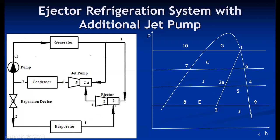This mixture from the ejector then enters the jet pump suction line. If the ejector outlet is directly connected to the condenser and the condenser pressure is high, there is a possibility of back pressure stopping operation. So the outlet of the ejector at point four is connected to the suction of the jet pump. The jet pump also has an intermediate pressure at point two-A. Points four and two-A mix at point five.